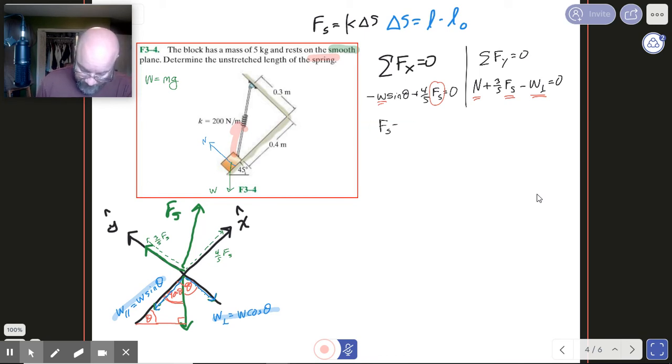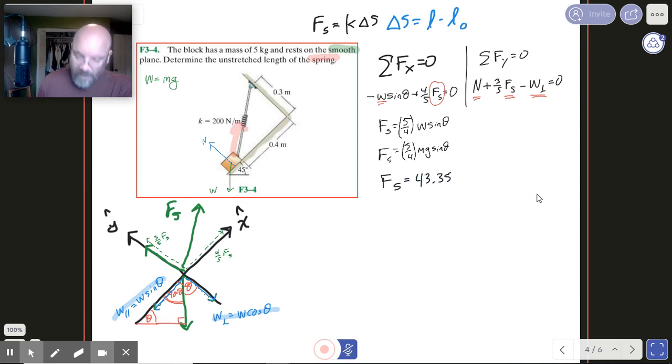So that means that Fs is going to be 5 fourths times W sine theta. Now let's go ahead and plug in for Mg. We could have plugged in for that earlier. Sometimes there is an advantage to plugging in Mg earlier. Sometimes there's not. It doesn't really matter. Nine times out of 10. I just decided for simplicity's sake to hold off. So I got 5 fourths Mg sine theta. Theta is 45 degrees. That's our Fs. So what that does for us then is once we run the numbers on that, we're going to get the force of the spring as 43.35. And don't you dare put any more digits on there. You know who I'm talking to. Just like that.